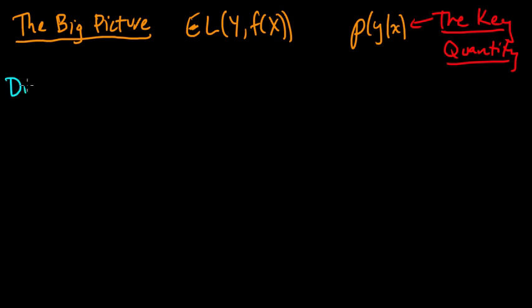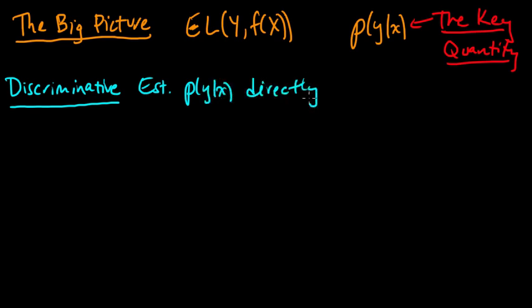So let's think about discriminative methods first. A discriminative method says, let's take advantage of this fact, the fact that we only really needed this conditional distribution. We didn't really need the marginal distribution on x to solve this minimization. And a discriminative approach says, estimate these conditional distributions, p of y given x, directly using your data D.